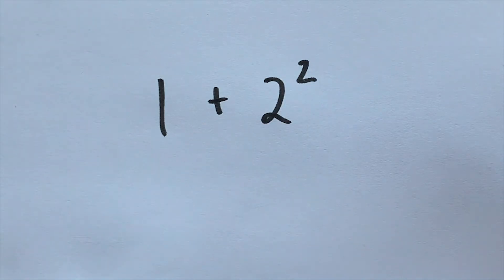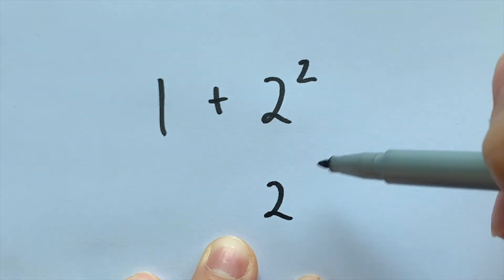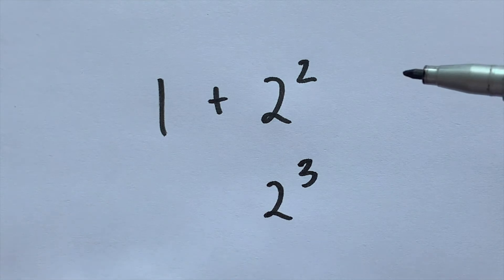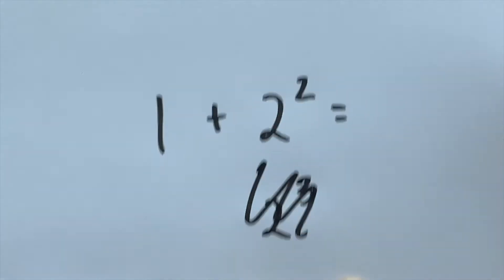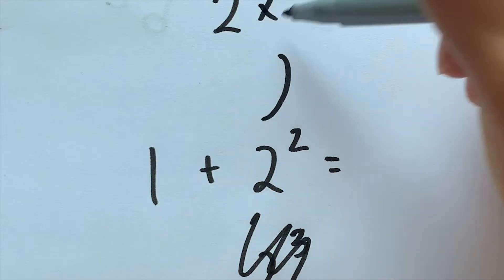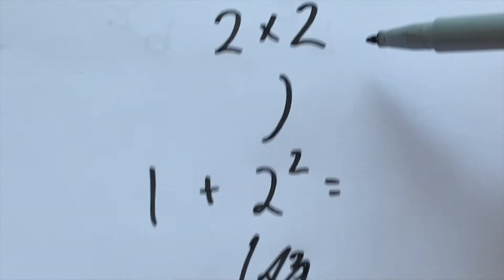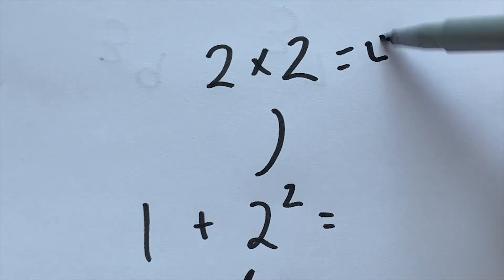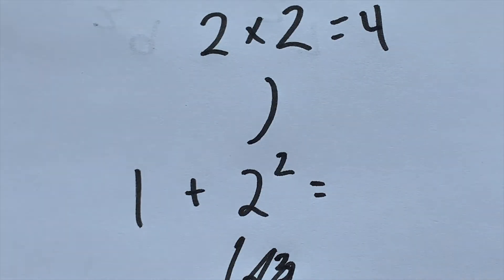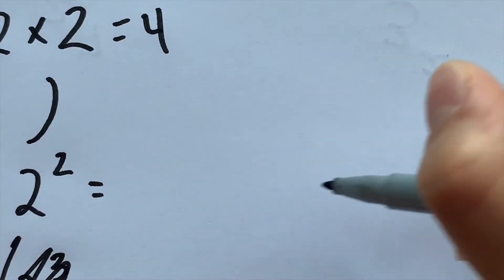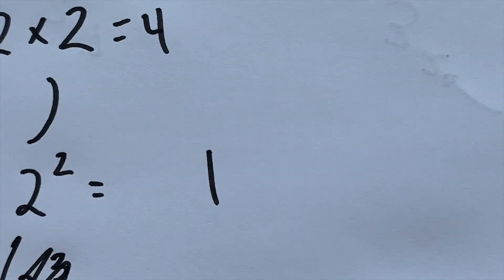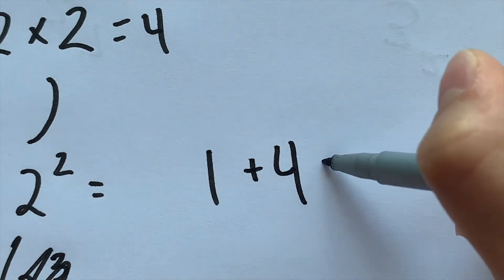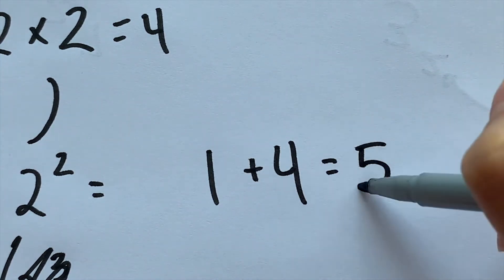When you see an exponent of two, we call it squared. When you see an exponent of three, we will call it cubed, and so on and so forth. But just as an example, so we translate this to two times two, which equals four. So then this problem is basically saying, what is one plus four? And the answer to that would be five.